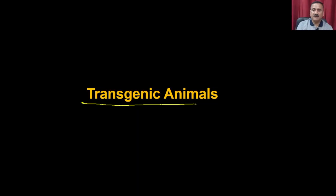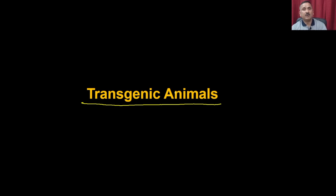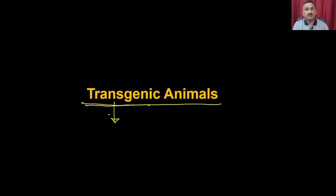In today's lecture we are going to discuss about transgenic animals. Transgenic animals are animals where you actually put external DNA into a particular organism. Transgenic means you are putting genetic content from the outside — trans means from outside — and that is how it modifies the particular animal.